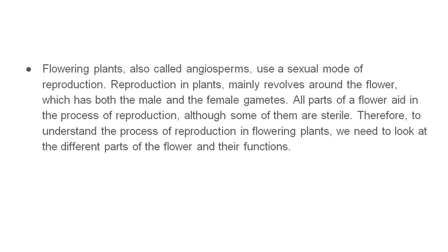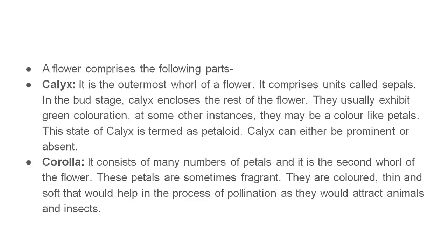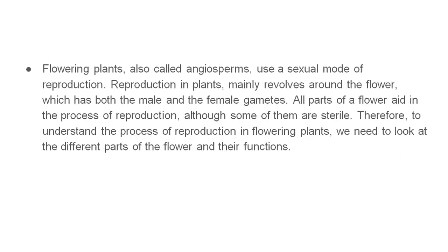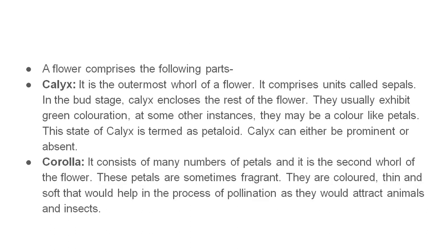There are a large number of questions from this chapter. First of all, calyx is the very outermost whorl — it is called calyx. The individual units are the sepals. In the sepals, the budding stage is very helpful. Usually it is green in color, which means photosynthesis occurs. And in certain instances, we have a colored one.